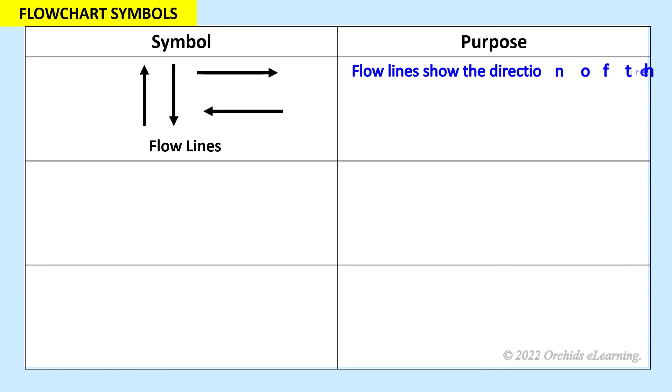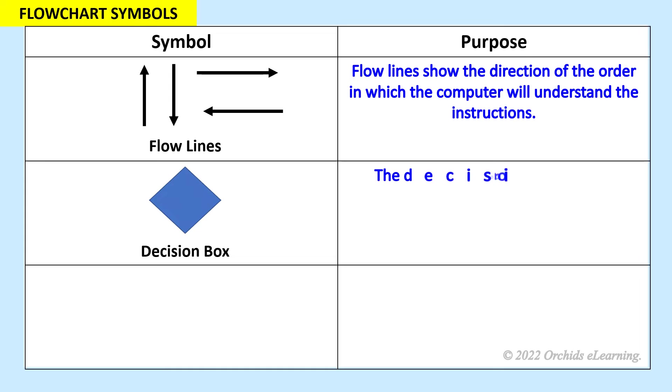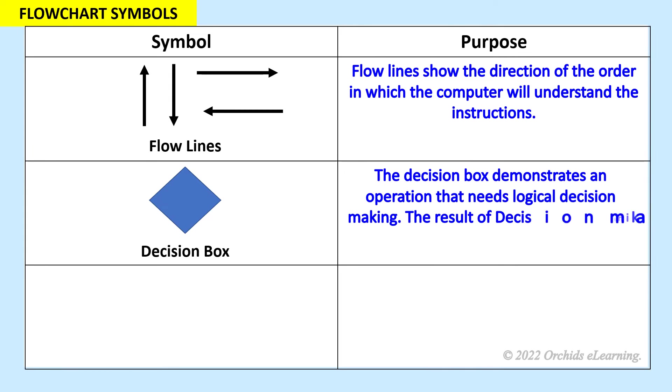Flow lines show the direction of the order in which the computer will understand the instructions. The decision box demonstrates an operation that needs logical decision making. The result of decision making can be either true or false.